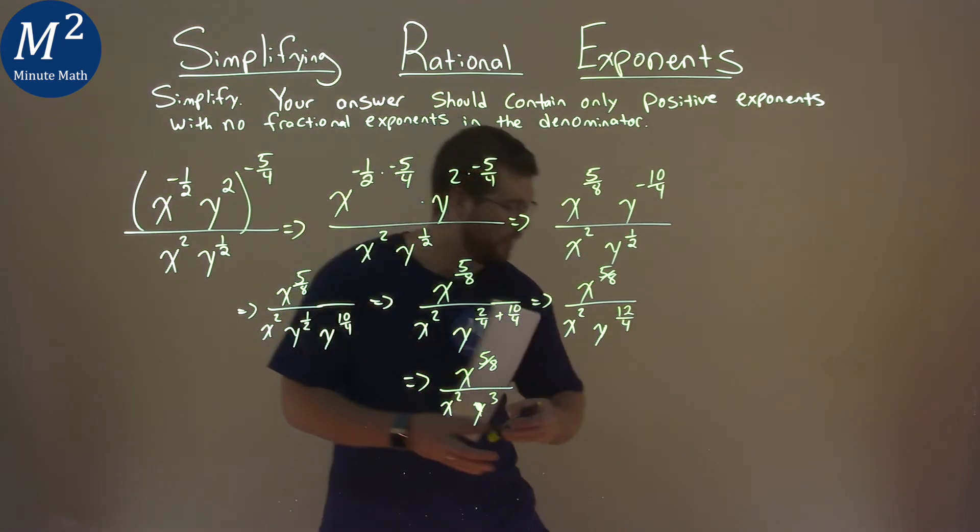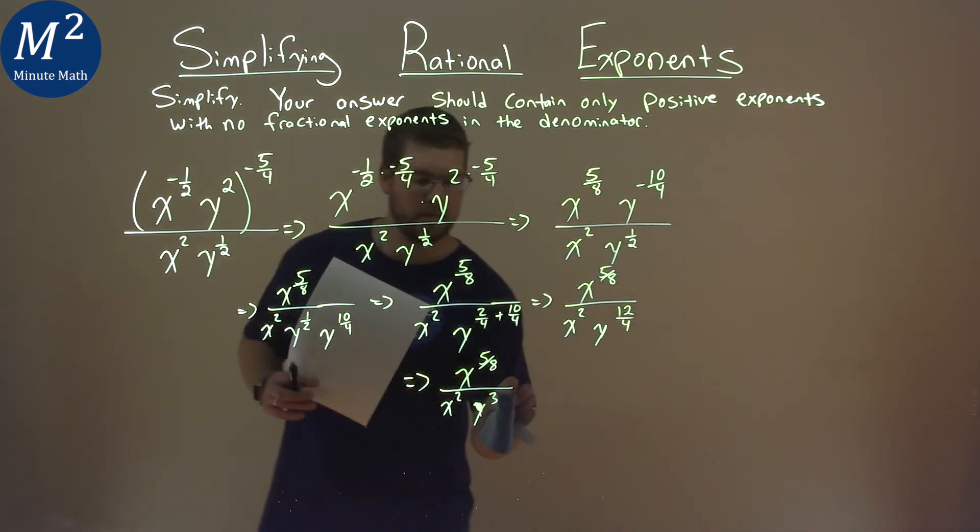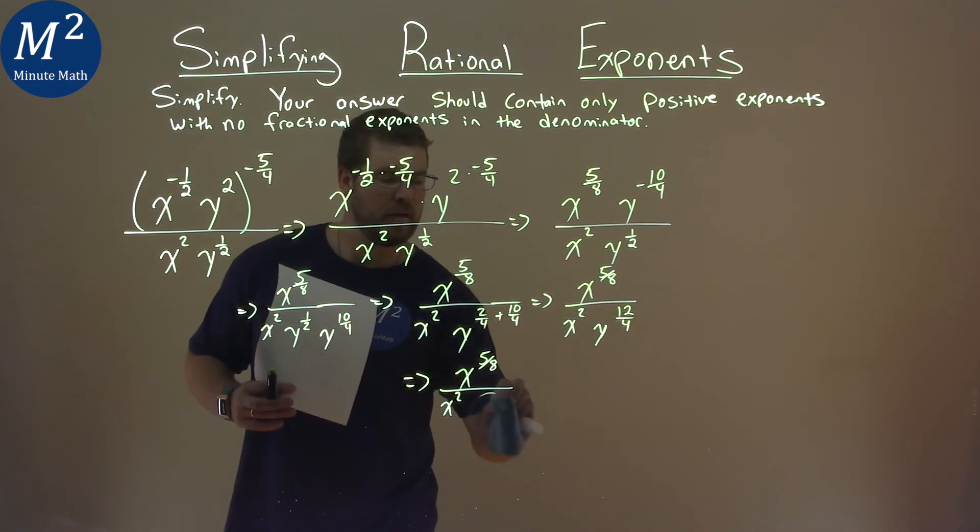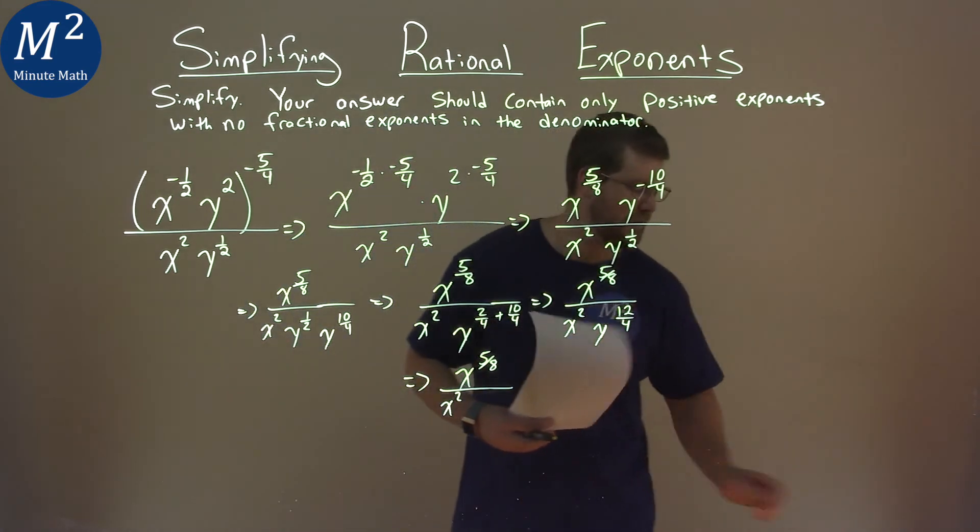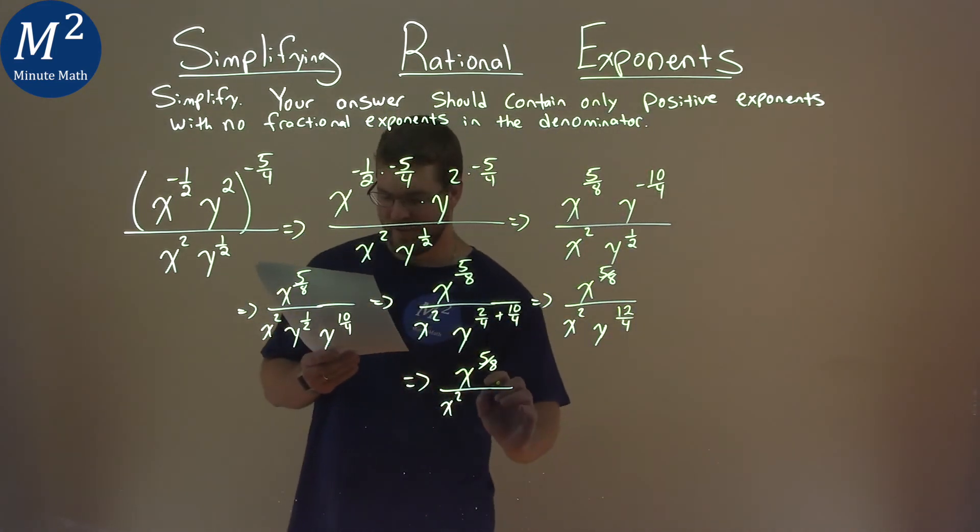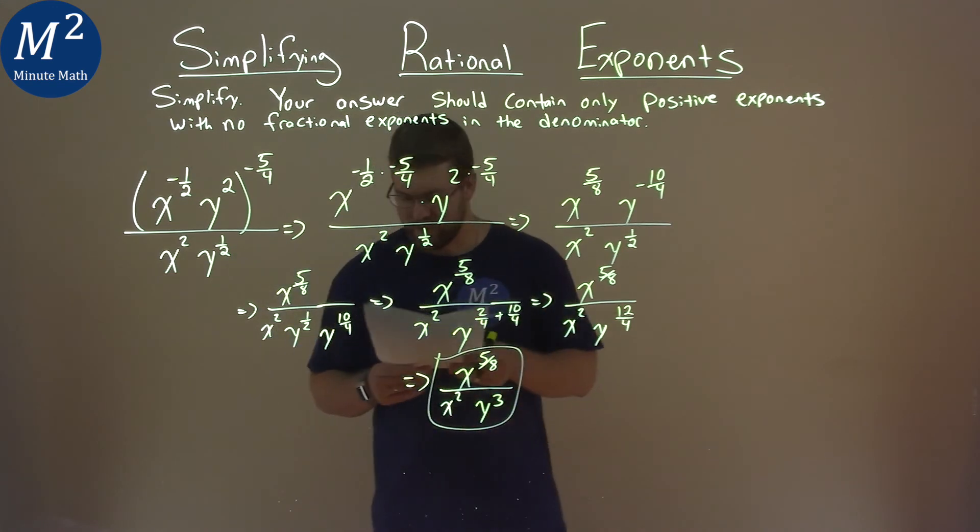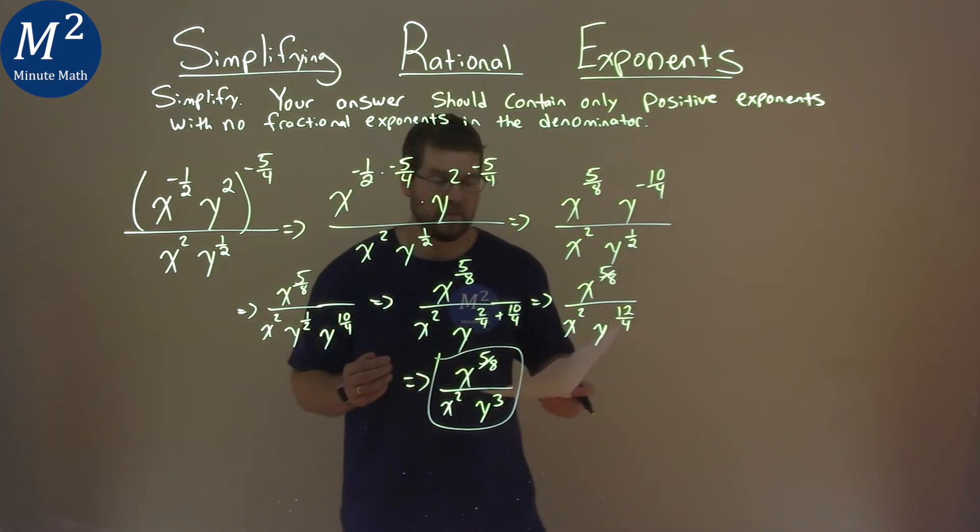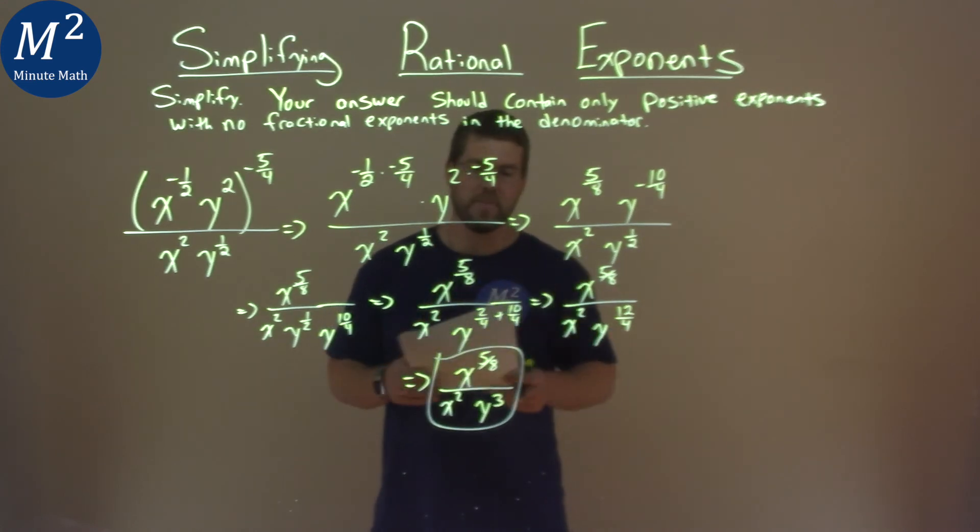Oh man, that's a bad-looking y. Sorry about that. I hope if you forgive me, let me know. If not, well, whatever. Y to the third power. And so after all that, our final answer is x to the five-eighths power, over x squared, y to the third power.